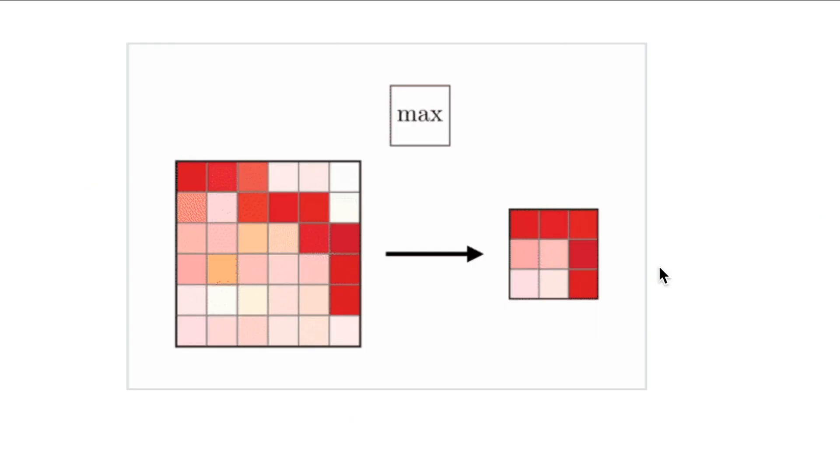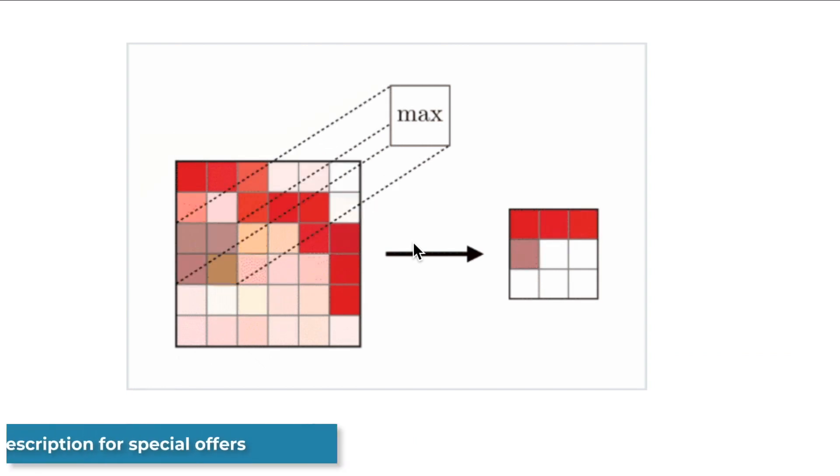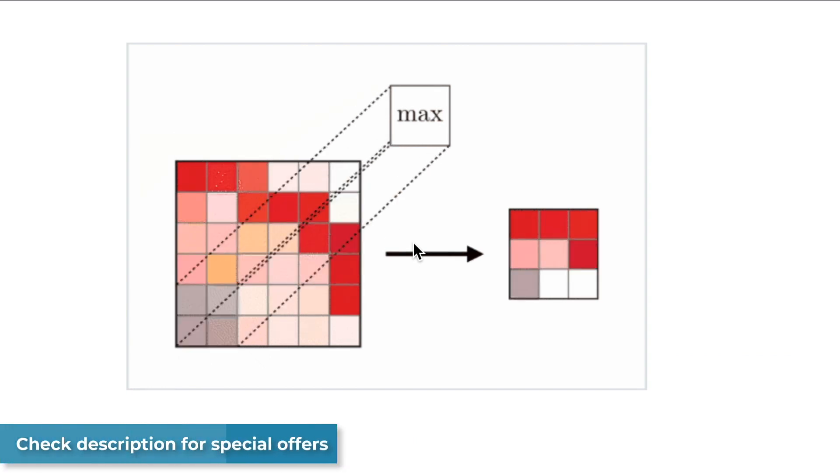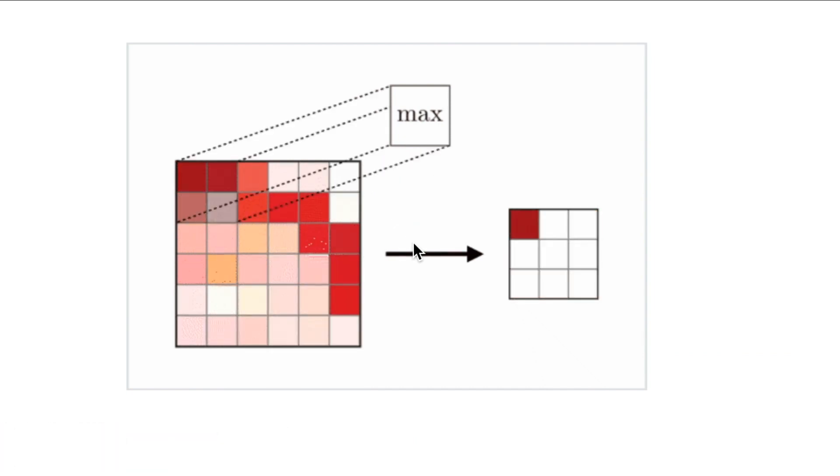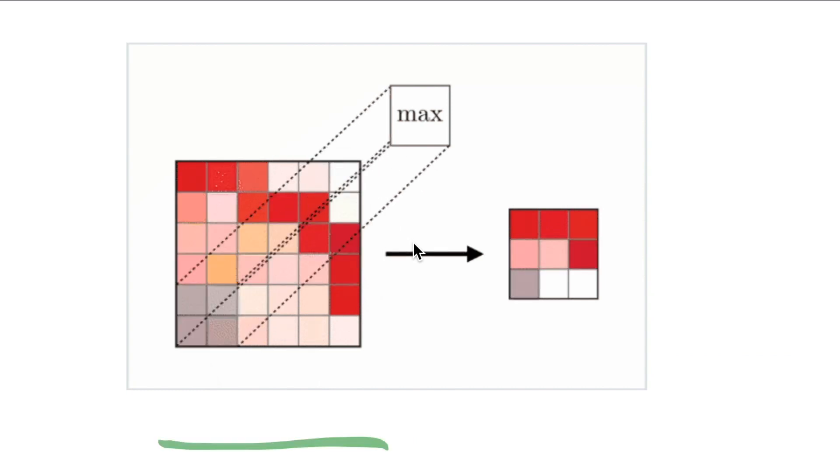Now before we look at another example, I would like to share with you this animation that essentially gives you another intuition on how this pooling is performed. Again we have our sliding window. The sliding window is going through all the pixels and we essentially represent the sub-image or the value of the matrix on the left with a more compact and more rescaled representation on the right.